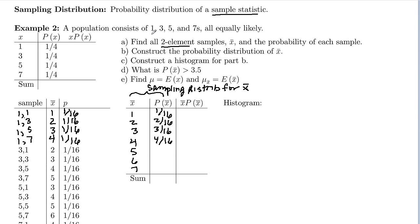We considered a population that consists of equally likely ones, threes, fives, and sevens. And we were working on finding all two element samples.